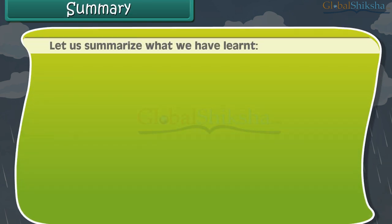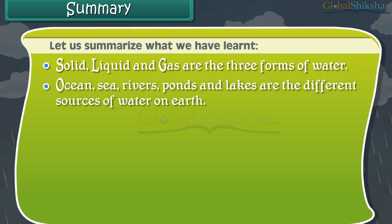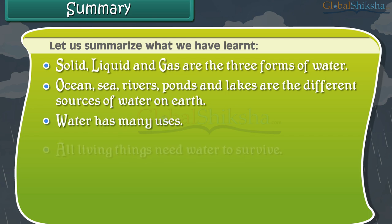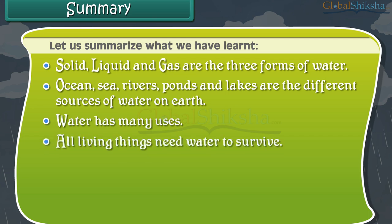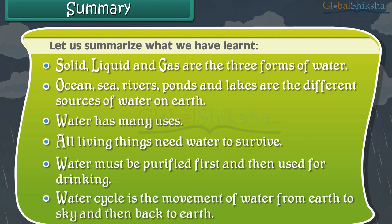Let us summarize what we have learned. Solid, liquid, and gas are the three forms of water. Ocean, sea, rivers, ponds, and lakes are the different sources of water on earth. Water has many uses. All living things need water to survive. Water must be purified first before it is used for drinking. Water cycle is the movement of water from earth to sky and then back to earth.